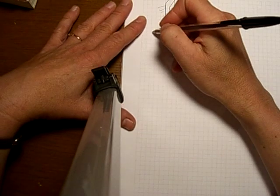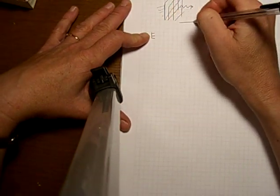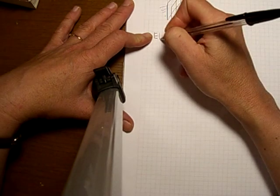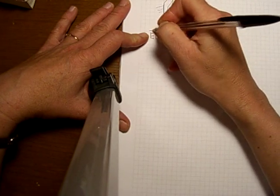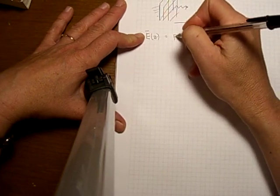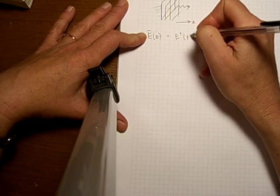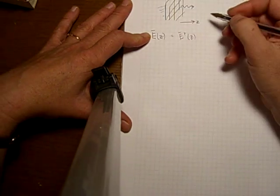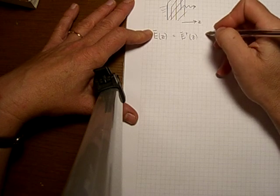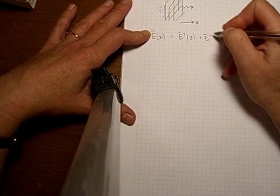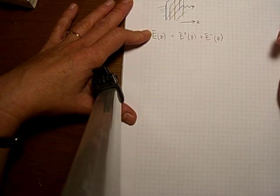In this case, we could write a simple equation for the electric field as a function of z. E(z) is going to have a positive going term - part of the electric field going this way. And just in case we hit something, we might also have an electric field going in the negative direction.